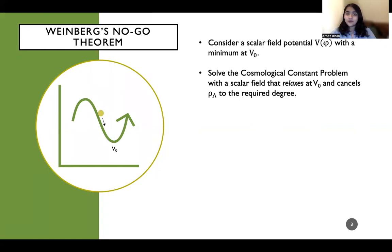There you go, the problem solved. That's what you think. Well, Weinberg's No-Go theorem actually tells us that in such solutions, V0 will also need to be fine-tuned to the same degree that rho-lambda needs to be fine-tuned. So this doesn't actually solve our problem.